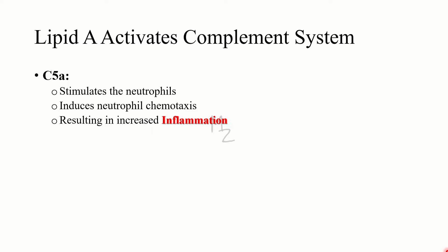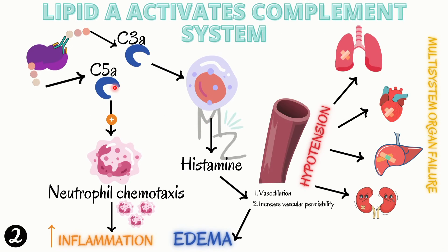C5a stimulates neutrophils and induces neutrophil chemotaxis — it attracts more and more neutrophils to the site. These neutrophils are immune cells that begin their function, resulting in increased inflammation. So C5a stimulates neutrophils, causes neutrophil chemotaxis, attracts more neutrophils to the site, and leads to increased inflammation.